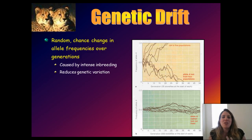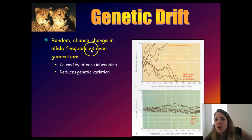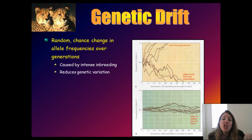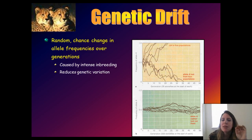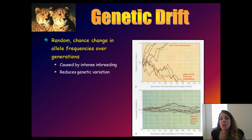Now we're going to another force in evolution called genetic drift. Genetic drift is defined as random chance change in allele frequencies over generations. The key word is random chance. This often is a problem for small populations, so conservation biologists are very concerned with genetic drift. They want to make sure they have a large enough population to prevent inbreeding, because when you get inbreeding, organisms lose their viability — their immune systems don't work as well, they're more prone to diseases, and their reproductive abilities are not as good.